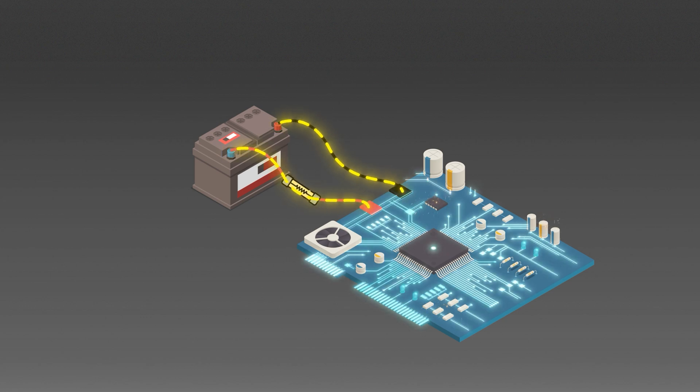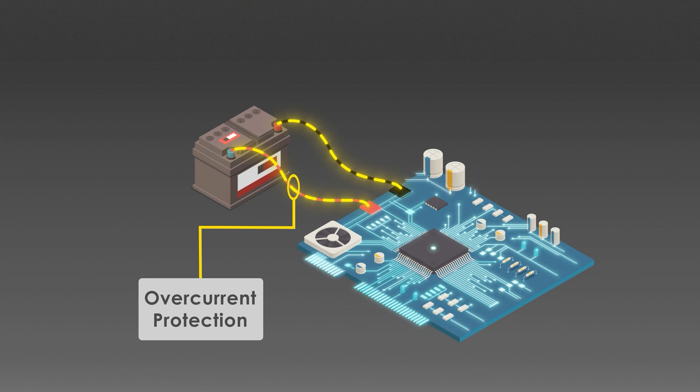But traditional fuses break the circuit when overcurrent happens. And once they are blown, we need to replace them. Instead, an overcurrent protection circuit can sense when the current exceeds a threshold value and sends an alert signal or shut down the system without permanent damage.